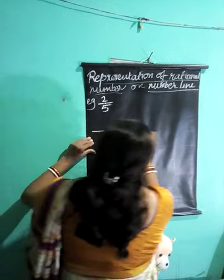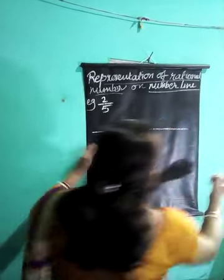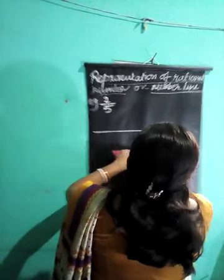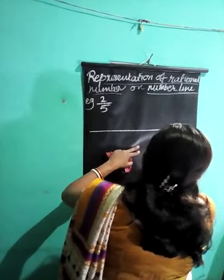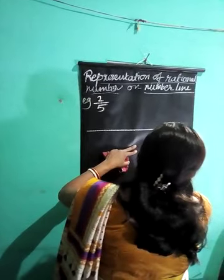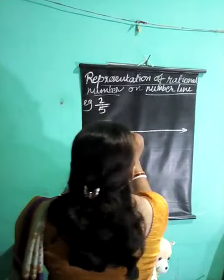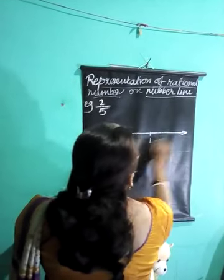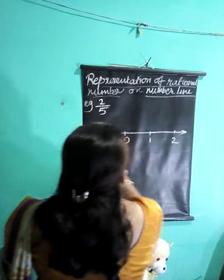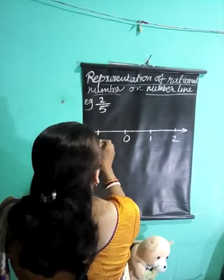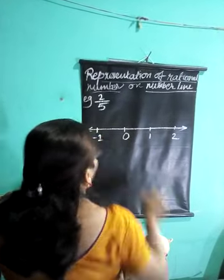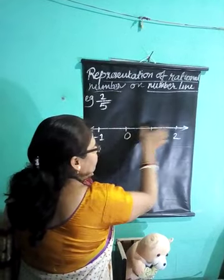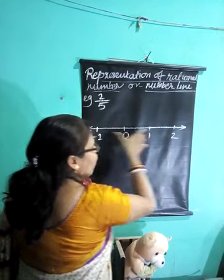First, we need to draw a straight line. Then mark 0, here 1, here 2. To the right side you will be marking positive numbers; to the left side you will be marking negative numbers. You should have equal spaces between 0 and 1, and between 1 and 2.